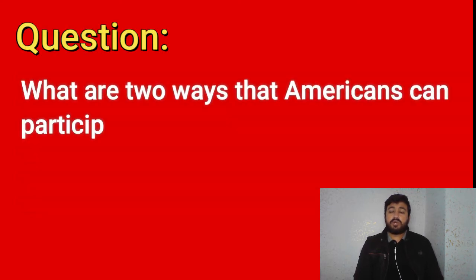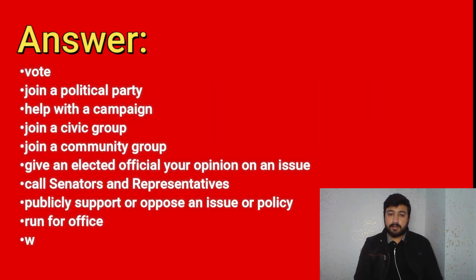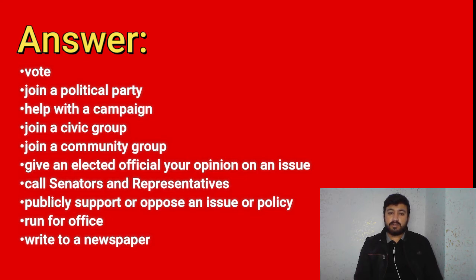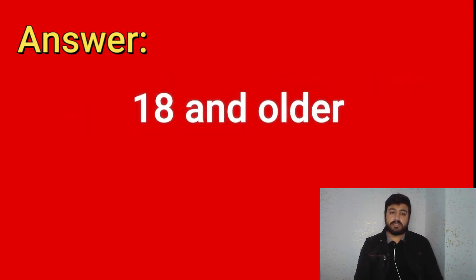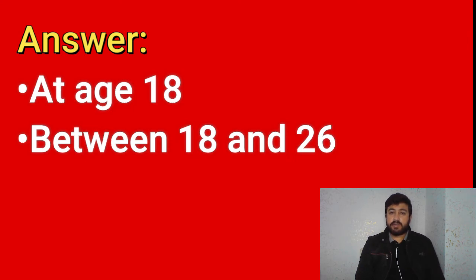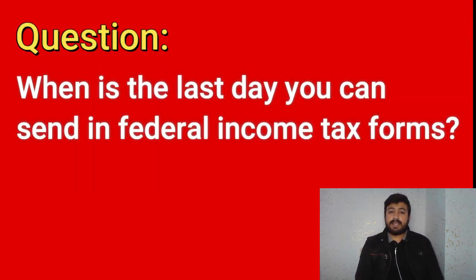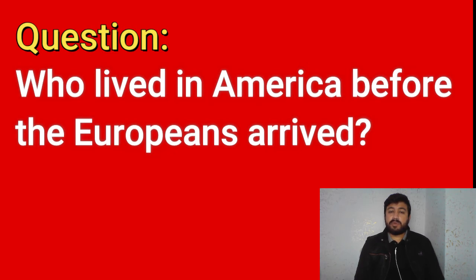What are two ways that Americans can participate in their democracy? Vote, join a political party, help with a campaign, join a civic group, join a community group, give an elected official your opinion on an issue, call senators and representatives, publicly support or oppose an issue or policy, run for office, write to a newspaper. How old do citizens have to be to vote for president? 18 and older. When must all men register for the Selective Service? At age 18, between 18 and 26. When is the last day you can send in federal income tax forms? April 15th.